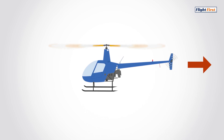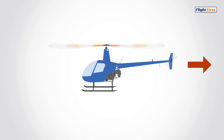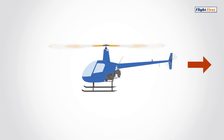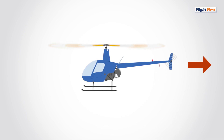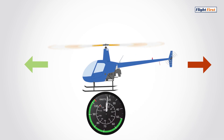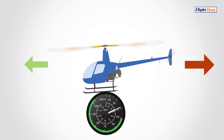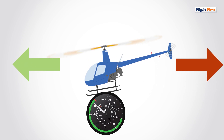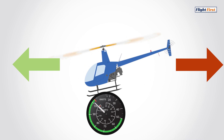Drag directly opposes thrust. Drag is a force created by the air interacting with the fuselage, rotor blades, skids, and so on. Part of the reason why we can't go infinitely fast in the air is due to drag. The faster we go, the stronger the drag will be. This means the faster we go in a helicopter, the more we need to tilt the main rotor forward to create more thrust. We need to balance thrust and drag just as we do with lift and weight.